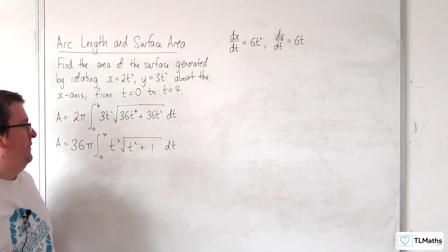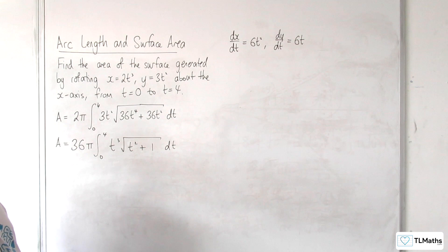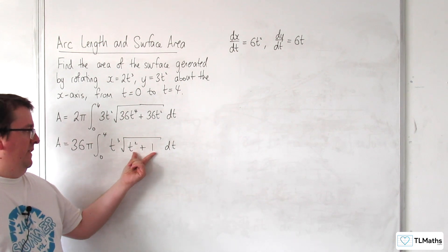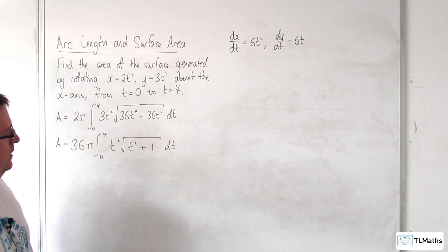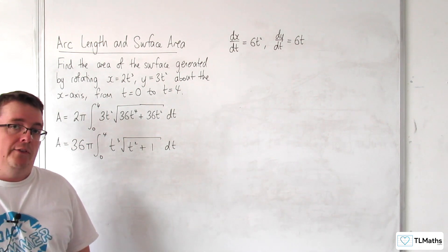Now, what method of integration to use? Well, again, parts is out. We can't immediately reverse the chain rule, because the derivative of the inside is not a multiple of the outside, so we can't do that. So then we should be looking at substitution.